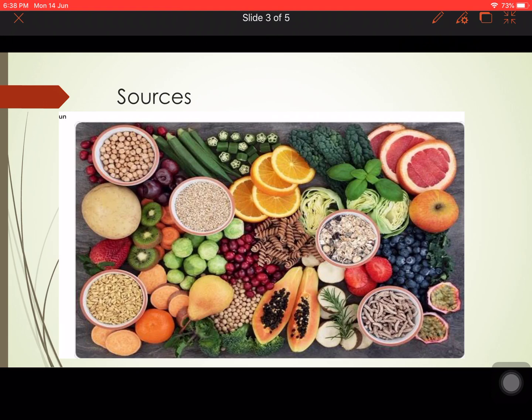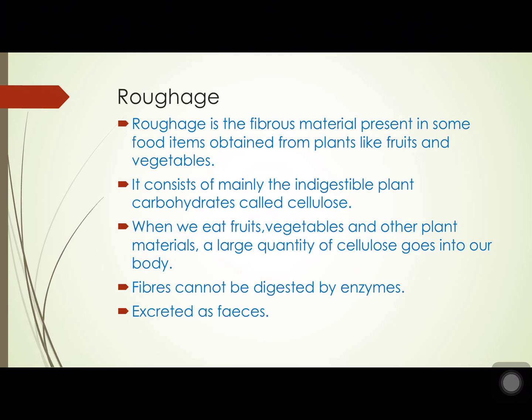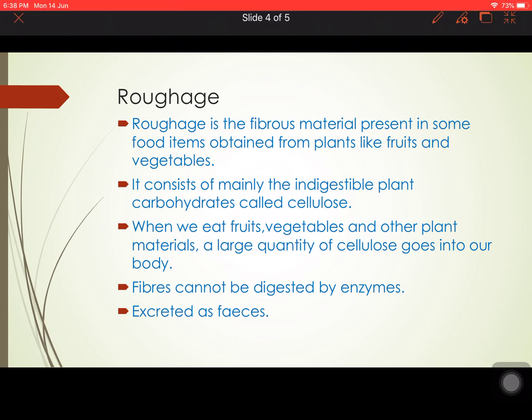So from this picture we understand that fruits, vegetables, and other plant materials are the main dietary sources of roughage. If we take an adequate amount of these, we are consuming large quantities of cellulose. Now, if we want to define roughage in one sentence: roughage is the fibrous material present in some food items, obtained mainly from plants like fruits and vegetables.